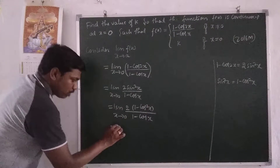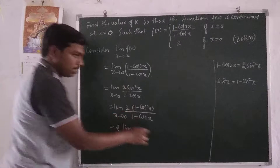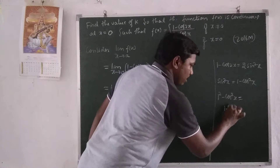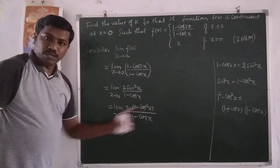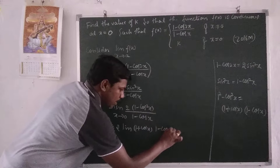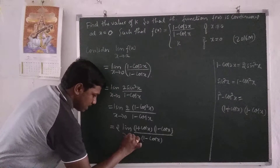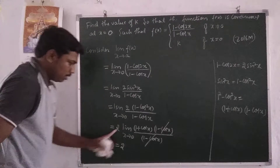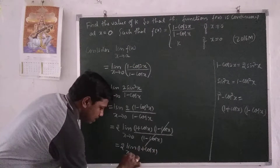Taking 2 as a constant outside the limit, we now factor 1 minus cos squared x using the identity a squared minus b squared equals (a plus b)(a minus b). So 1 minus cos squared x can be written as (1 plus cos x) into (1 minus cos x). This gives us the limit of 2 into (1 plus cos x)(1 minus cos x) divided by (1 minus cos x) as x tends to 0. The (1 minus cos x) terms cancel, leaving the limit of 2 into (1 plus cos x) as x tends to 0.